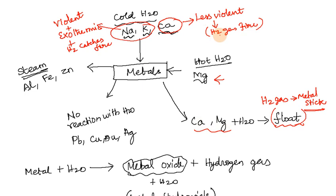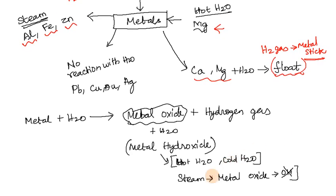For steam reactions: Aluminium, Iron, and Zinc react with steam. The products are metal oxide and hydrogen gas. Metal oxide can convert to metal hydroxide. Metals like Lead, Copper, Silver, and Gold do not react with water in any form.